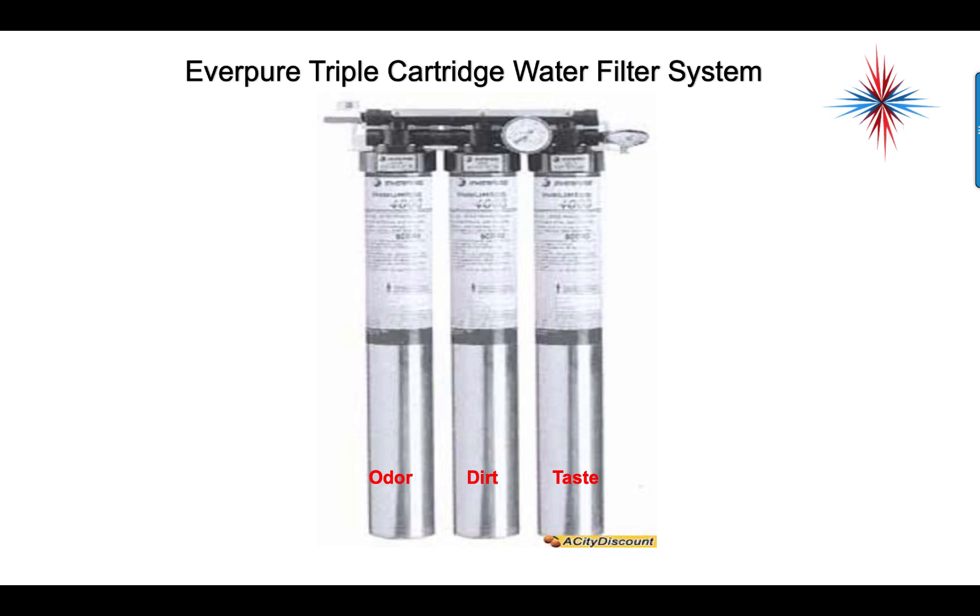You'll see a lot of times a triple water filter system that's put in line with the ice machine, because we don't want to pull dirt in, we don't want to pull chlorine in, and we want to try to kill odors. It's very important that these filters do not get clogged up, because the size of the ice cube is based on the water supply and the water temperature.